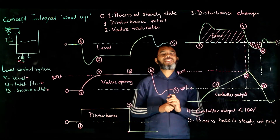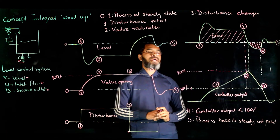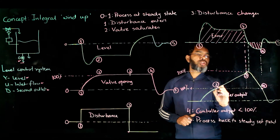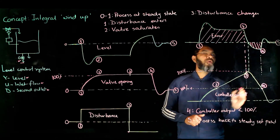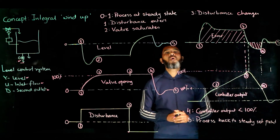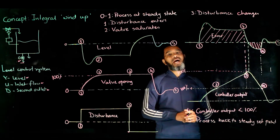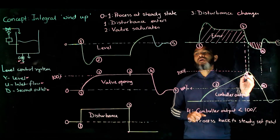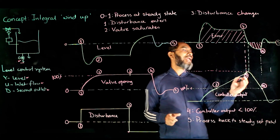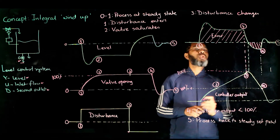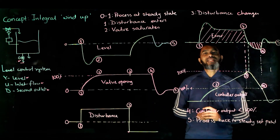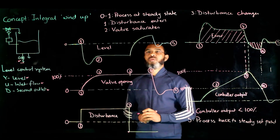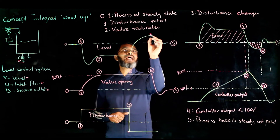This is what is called the windup situation: when the valve saturates, the controller keeps calculating the control action beyond 100%, and if that happens, the control action does not change until it comes back to 100%, meaning until a negative error occurs. Between instants 3 and 4, when the disturbance changed, the control action was supposed to reduce valve opening to bring the process back to set point, but that did not happen because the theoretical calculation was beyond 100%.